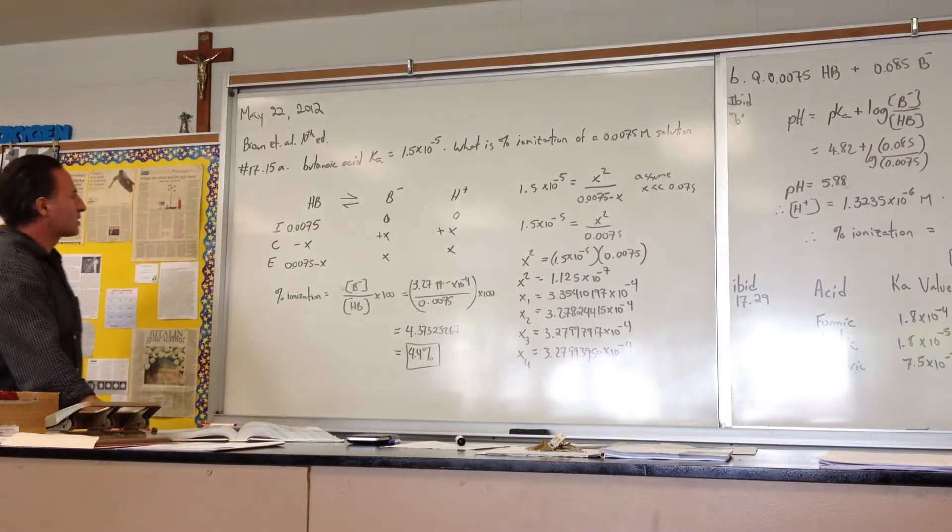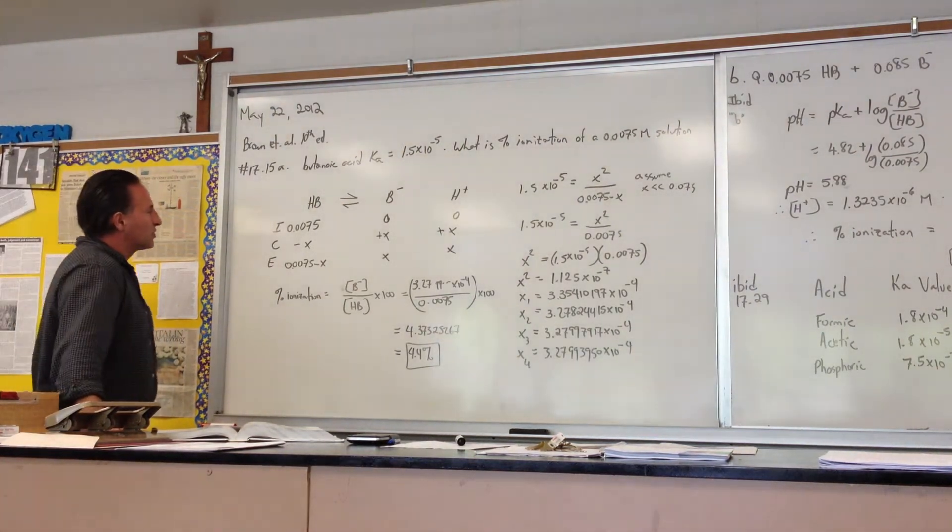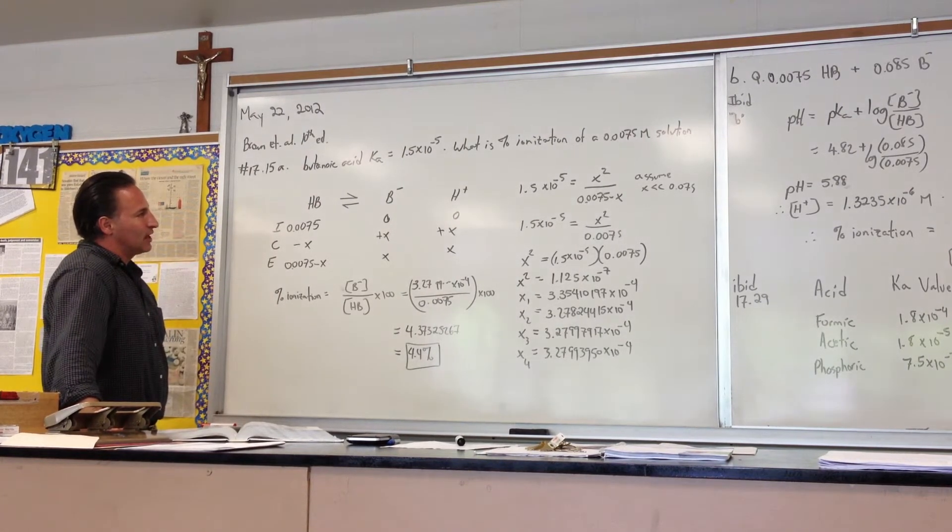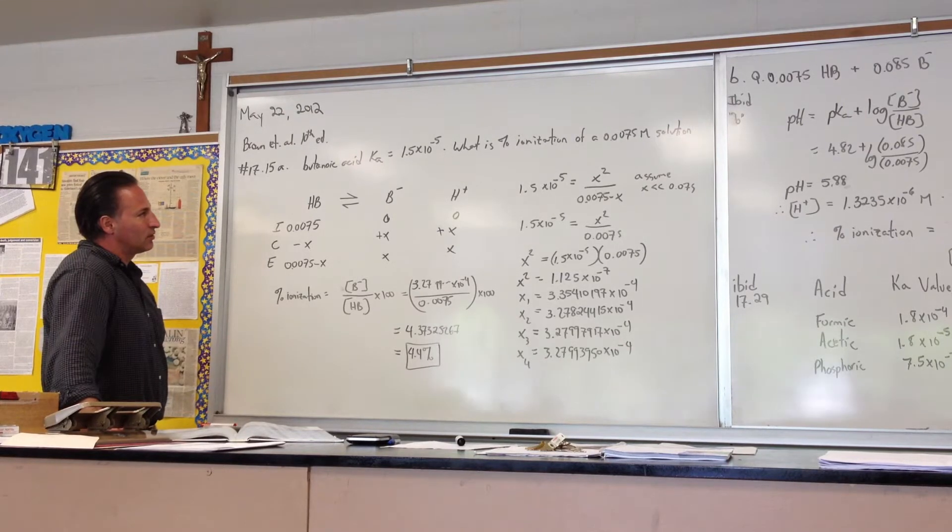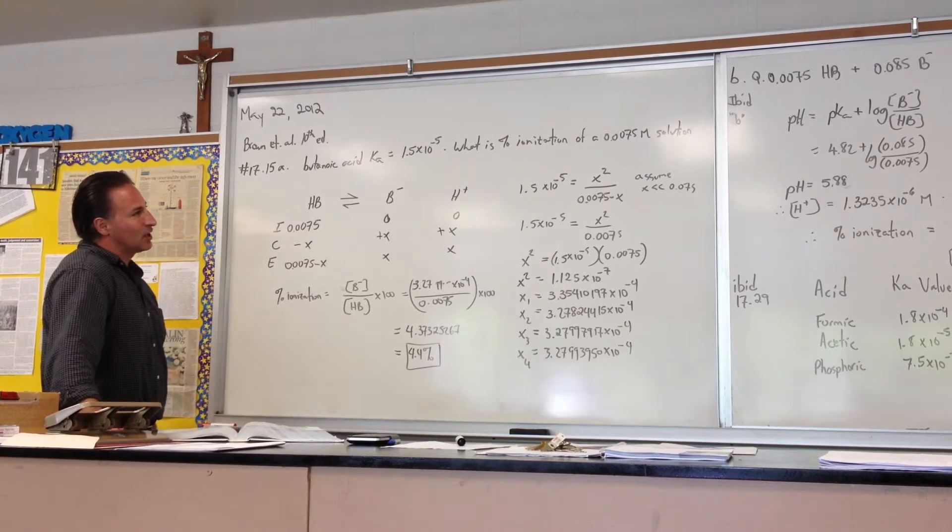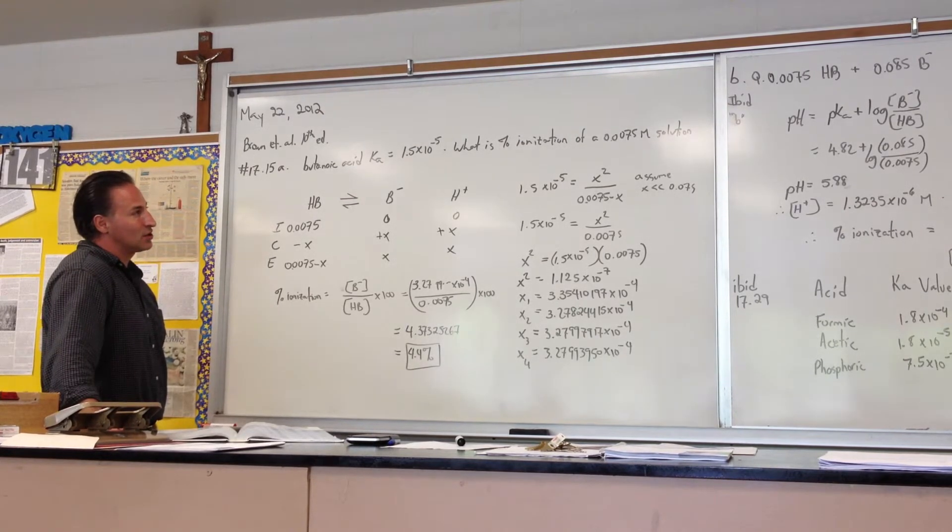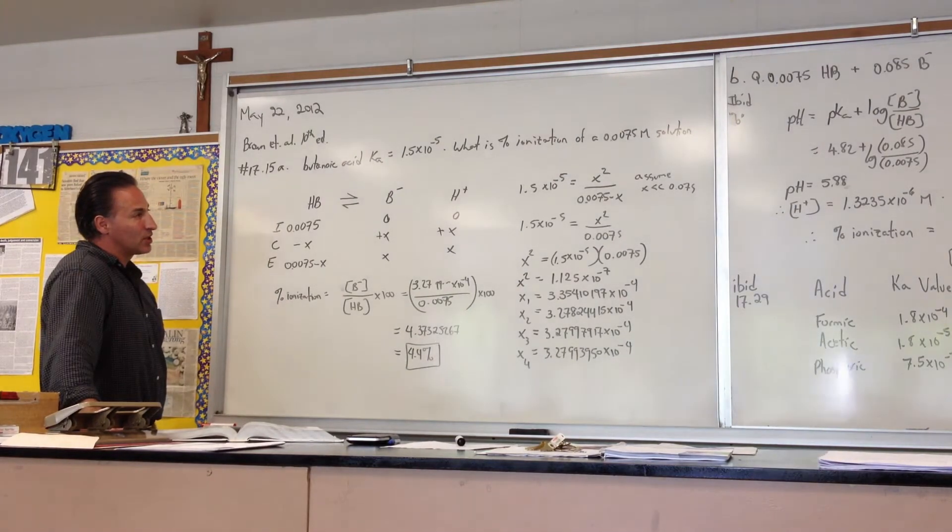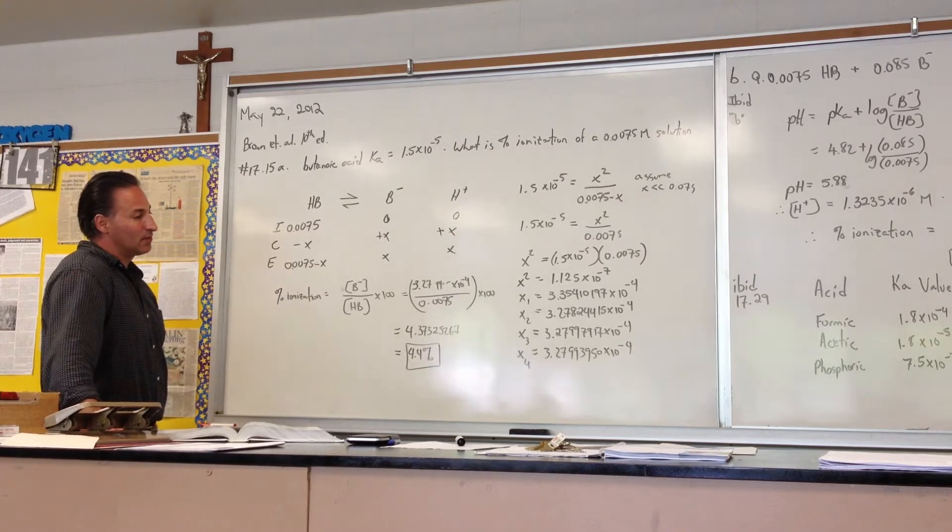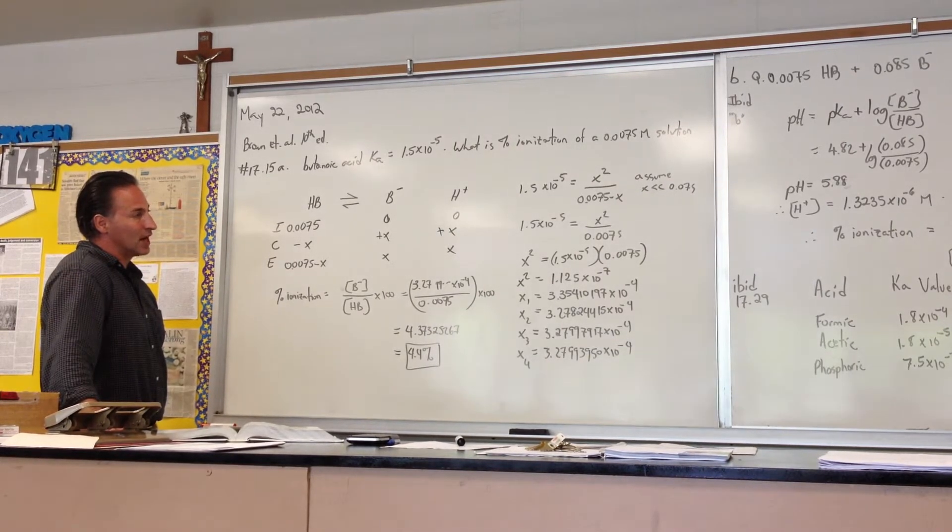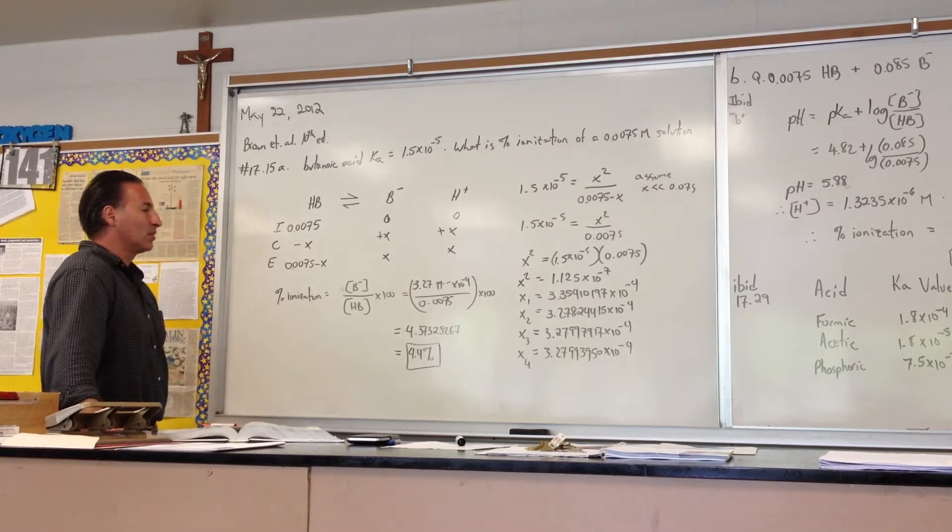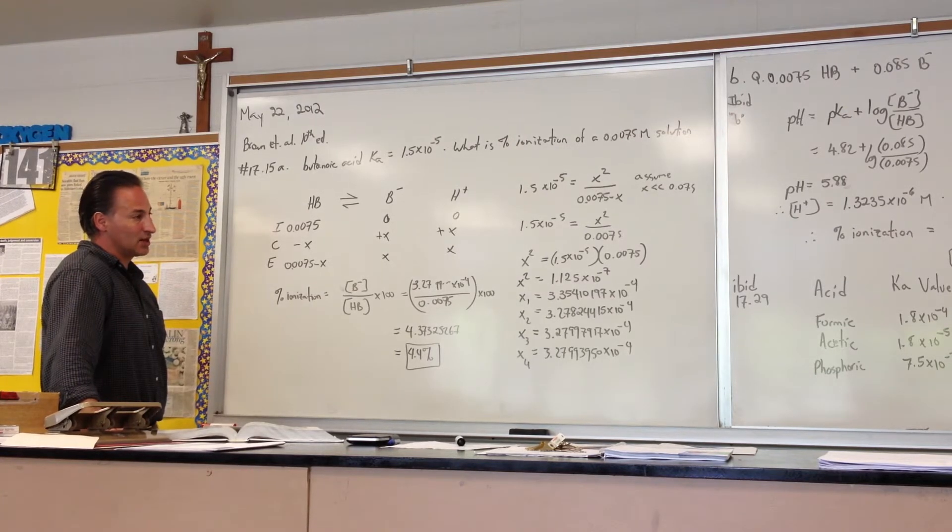Today's question asks, what is the percent ionization of a solution of butanoic acid? It's a two-part question. The first half asks what's the percent ionization of a 0.0075 molar solution of butanoic acid? And then the second half asks what's the percent ionization of the same acid, but now an additional 0.085 molar concentration of butanoate is added to the solution. So the conjugate base of butanoic acid is added in a certain concentration, and we want to calculate what the percent ionization is under those conditions.